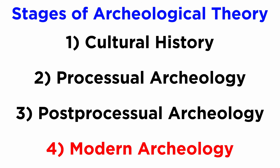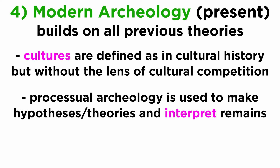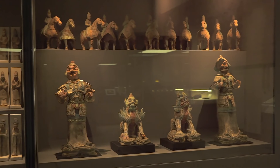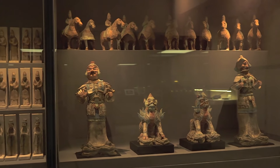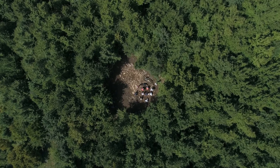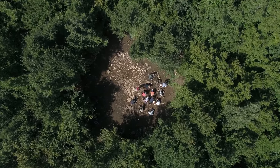Modern archaeological theory builds on all previous theories. Cultures are still defined in the manner of cultural history, but without the lens of cultural competition. Processual archaeology is still used in making hypotheses and theories in interpreting remains with the scientific method, but these interpretations aren't seen as unfalsifiable outcomes. Modern archaeology also places importance on fixing centuries of unethical practice toward descendants of people archaeologists were studying. Past archaeological theory has often treated artifacts and sites as data points rather than objects of cultural heritage. We will discuss archaeological ethics in more detail later in the series, but for now, since we are familiar with archaeological theory, let's dive into methodology.